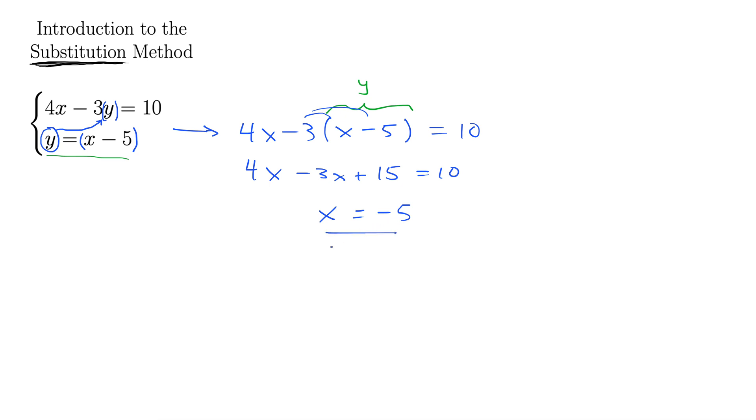So there's part of our answer, but it's not our entire answer. Remember, when you have a system of equations, the answer needs to be in the form of a point—an ordered pair. Something comma something else, x and y. Or at least you need to have it as x equals something and y equals something.